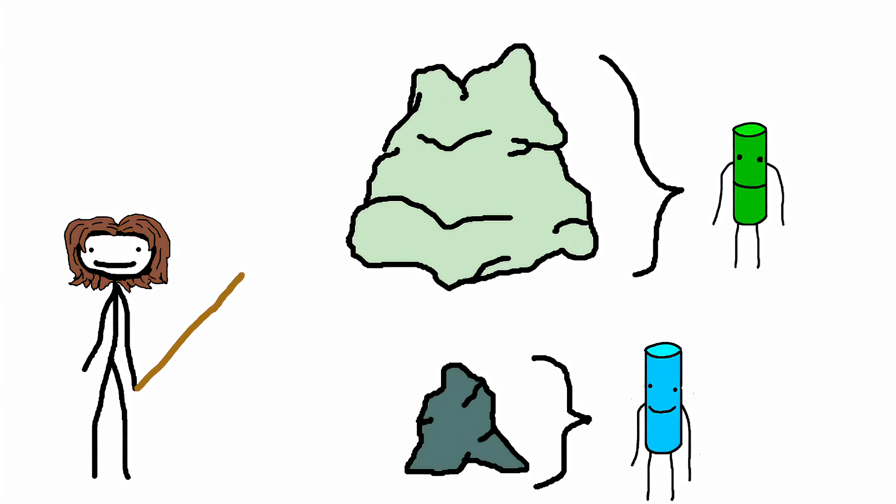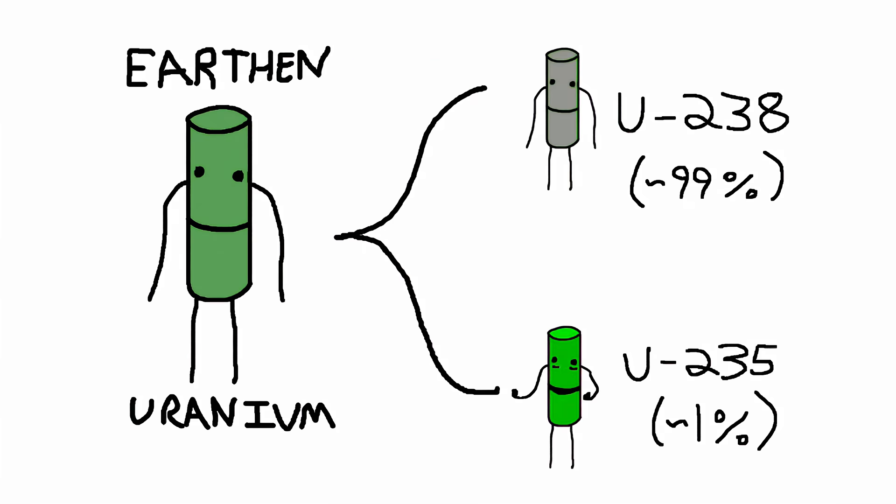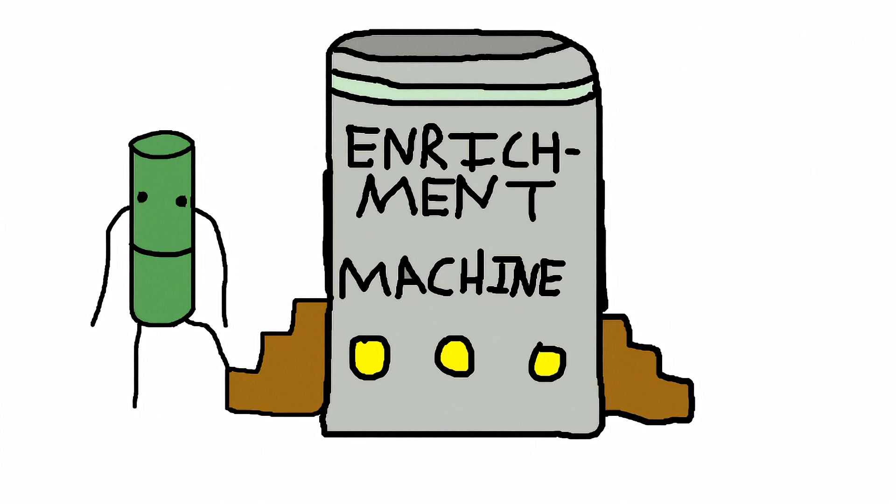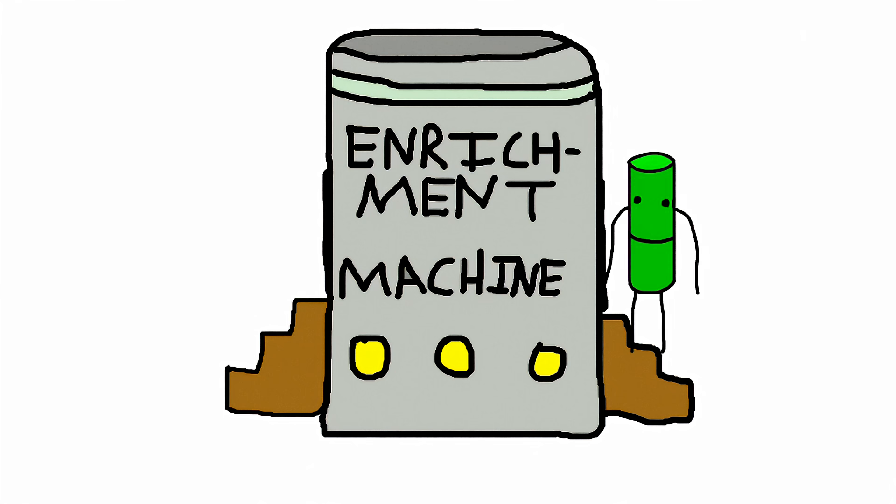So you got your ore, and you've extracted it. Ready for work, right? Wrong. You see, natural uranium mainly consists of two different isotopes, uranium-235 and uranium-238. 238 kind of sucks at life, so uranium has to undergo enrichment to up its concentration of 235.